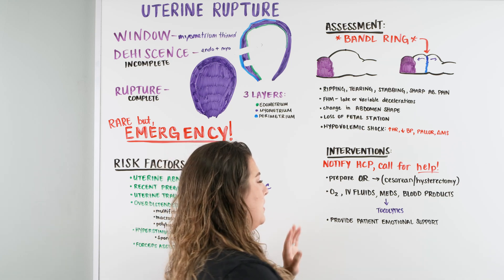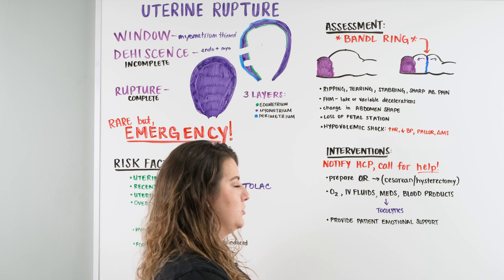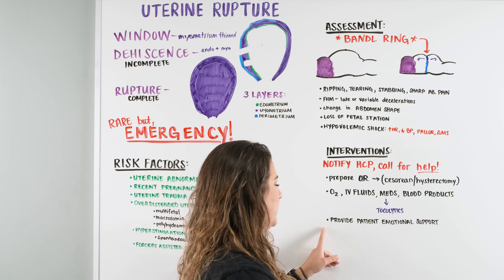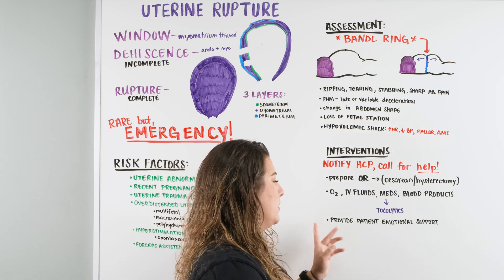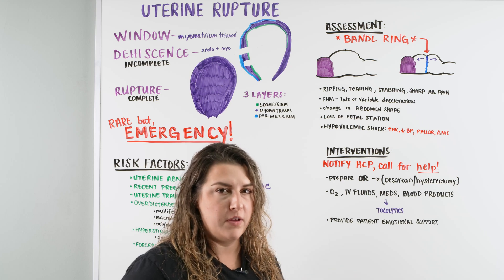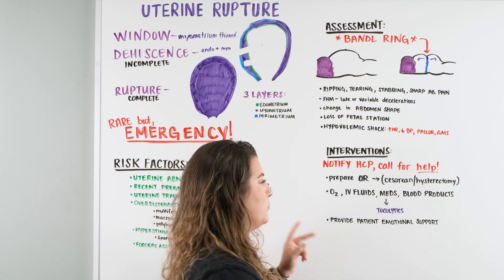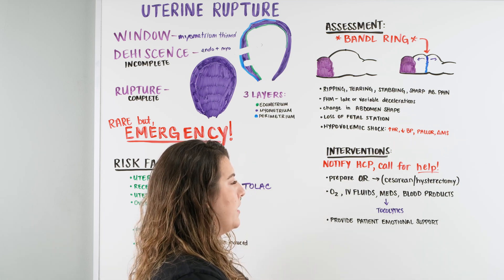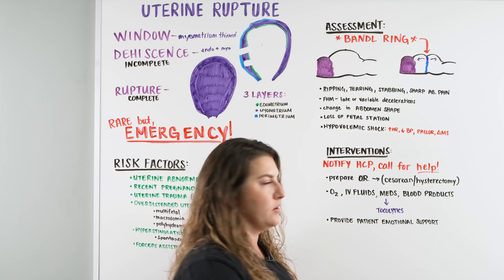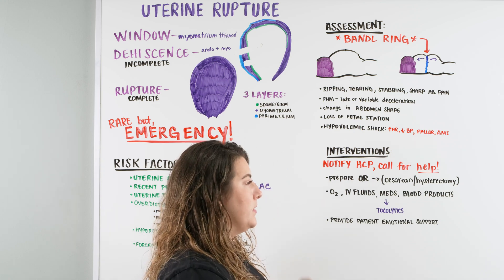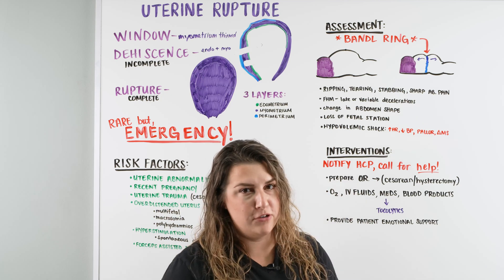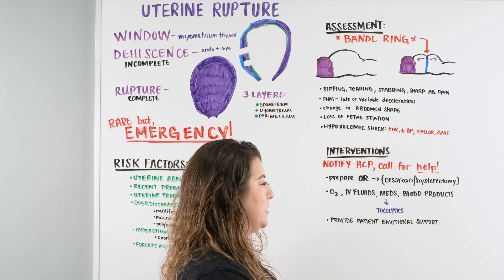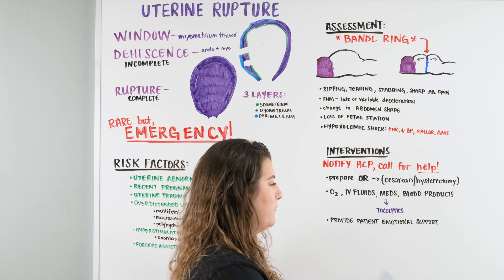If it's caught early and you're bringing the team in but it's not yet fully emergent, you can tell the patient what's going on and provide emotional support to the patient and family. But if this is a real quick emergency and you've got to get the patient to the OR, make sure you're telling the healthcare provider, your floor, and your charge nurse, and get the OR ready — your anesthesiologist and neonatal team need to be there to ensure the best outcome.